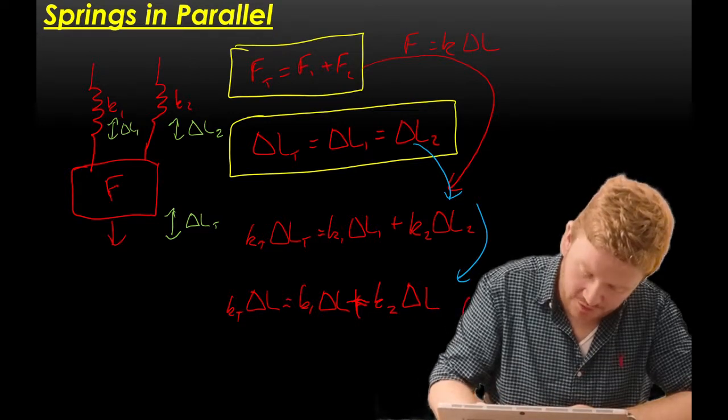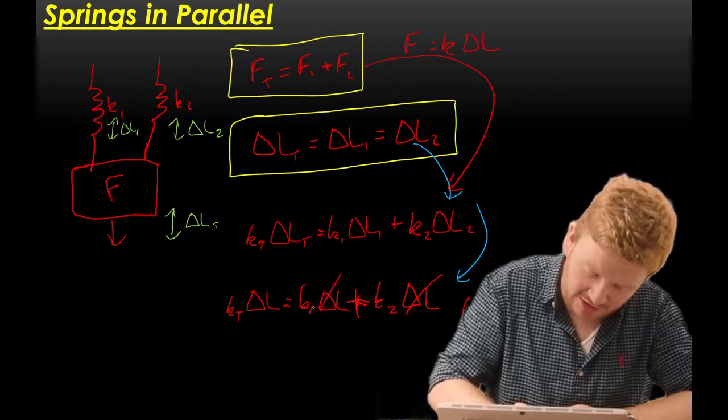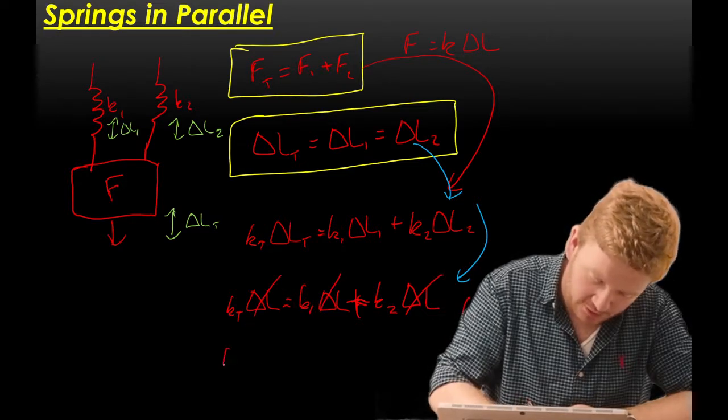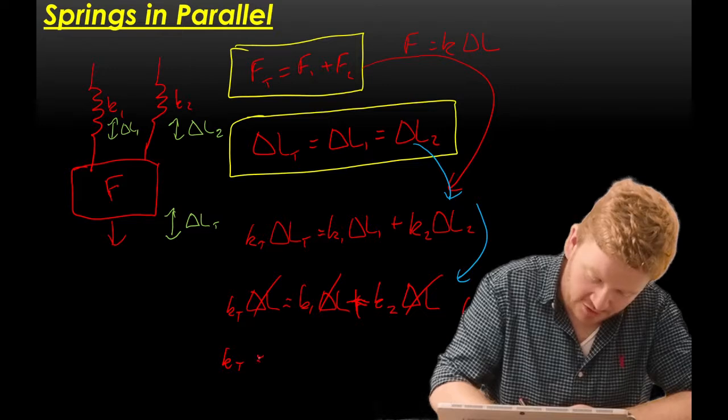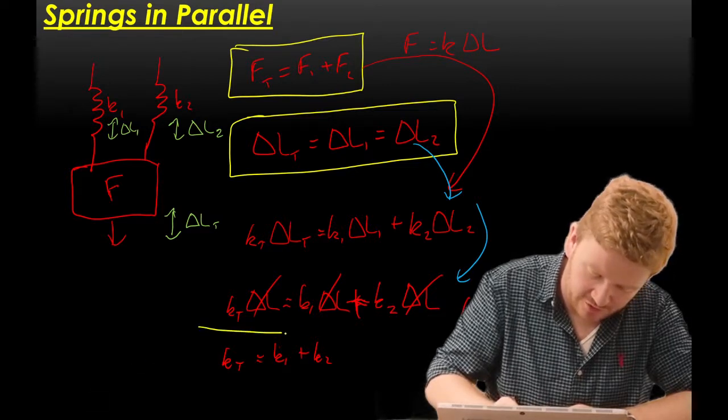And again, because all of those delta Ls are the same, I can divide both sides by delta L, cancel the delta Ls, and it simply becomes kt is equal to k1 plus k2. And there you have it.